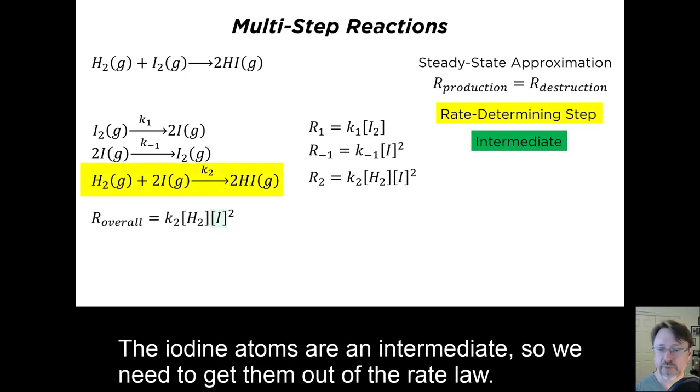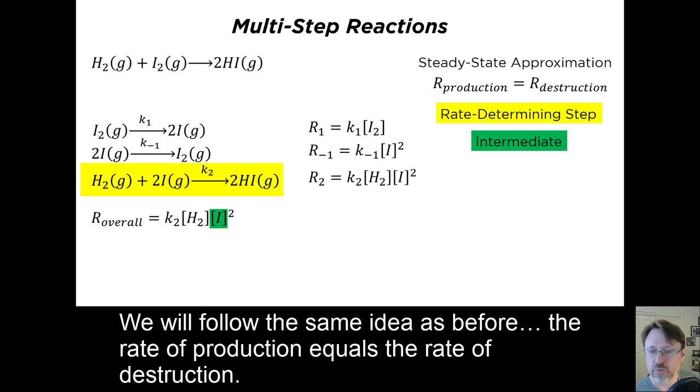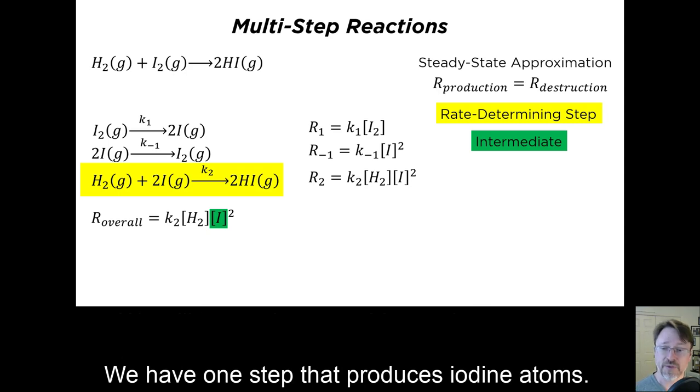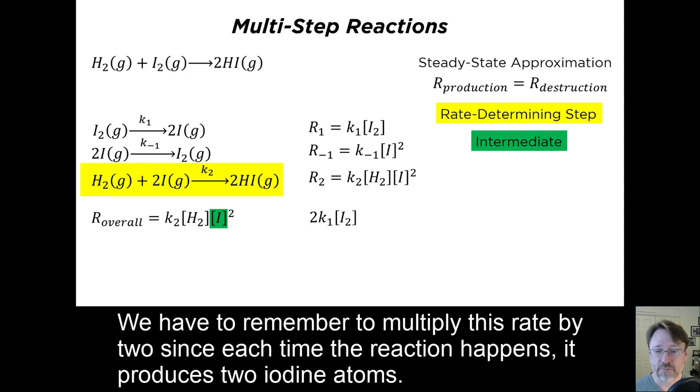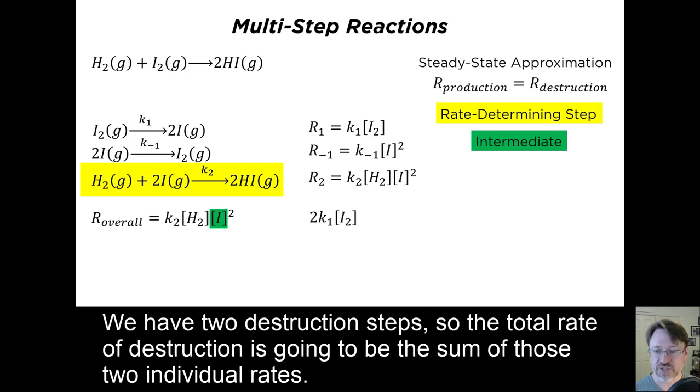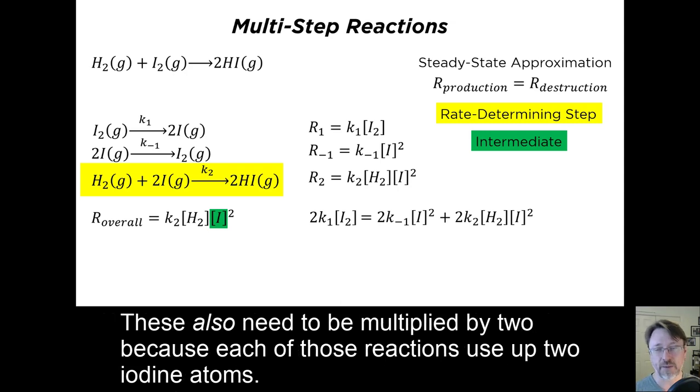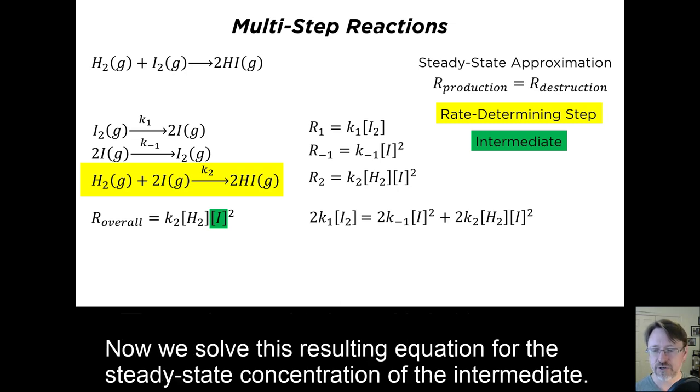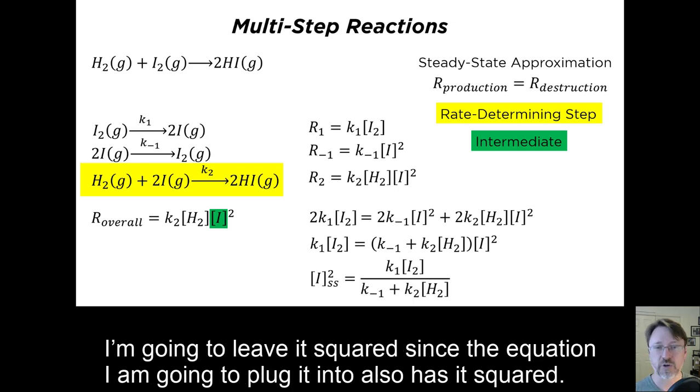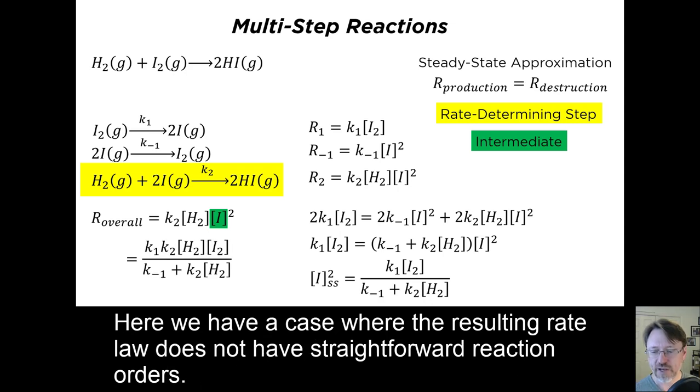The iodine atoms are an intermediate, so we need to get them out of the rate law. We will follow the same ideas before. The rate of production equals the rate of destruction. We have one step that produces iodine atoms. We have to remember to multiply this rate by two, since each time the reaction happens, it produces two iodine atoms. We have two destruction steps, so the total rate of destruction is going to be the sum of those two individual rates. These also need to be multiplied by two, because each of those reactions use up two iodine atoms. Now we solve the resulting equation for the steady-state concentration of the intermediate. I'm going to leave it squared, since the equation I'm going to plug it into also has it squared.